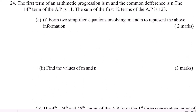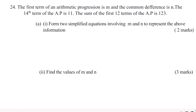So let's go to the first part. You're supposed to form two simplified equations involving M and N to represent the above information. This is an arithmetic progression. The first term is given as M and the common difference is N. The nth term of an AP is written as A plus (N minus 1) times D. In this particular question, the first term will be represented by M and the common difference is N.